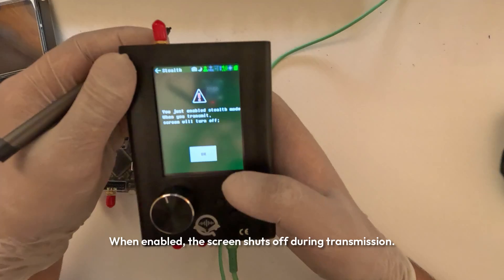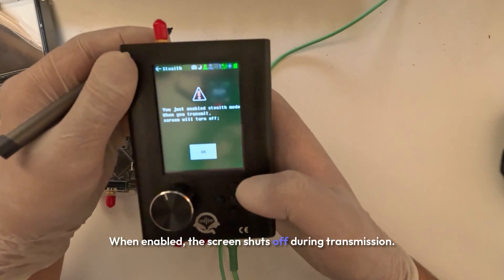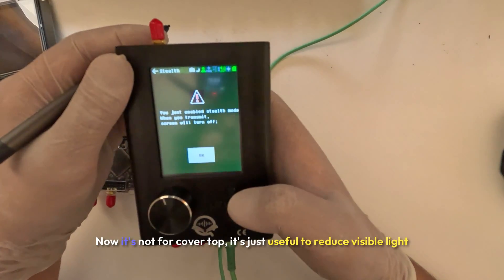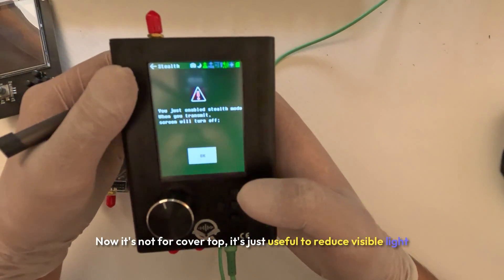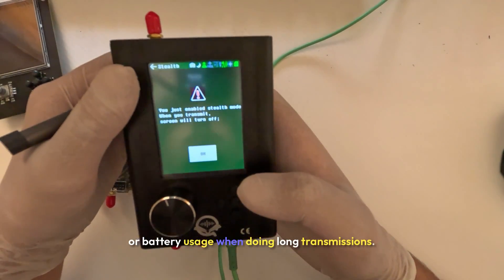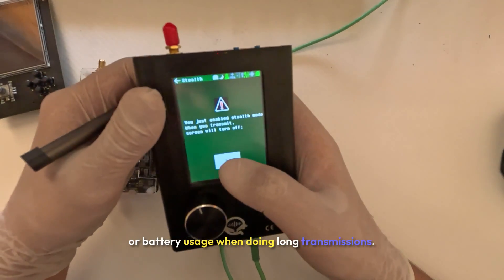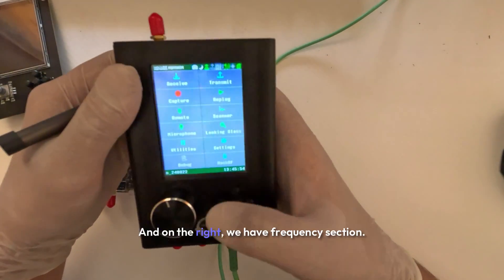When enabled, the screen shuts off during transmission. It is not for covert ops. It is just useful to reduce visible light or battery usage when doing long transmissions.